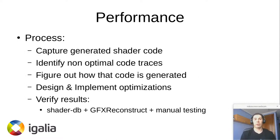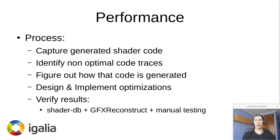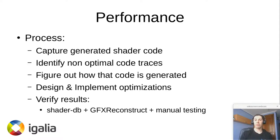In terms of the performance process, the approach is fairly basic. We captured generated shader code from the Unreal Engine 4 samples, then tried to identify non-optimal code traces by eyeballing these captures for a very long amount of time. Once we identified non-optimal traces, we had to trace them back in the compiler stack to understand when and why they were generated, then design ways to produce better code generation for those situations.